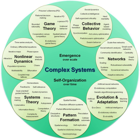The term 'complex systems' often refers to the study of complex systems, which is an approach to science that investigates how relationships between a system's parts give rise to its collective behaviors and how the system interacts and forms relationships with its environment. The study of complex systems regards collective, or system-wide, behaviors as the fundamental object of study. For this reason, complex systems can be understood as an alternative paradigm to reductionism, which attempts to explain systems in terms of their constituent parts and the individual interactions between them.